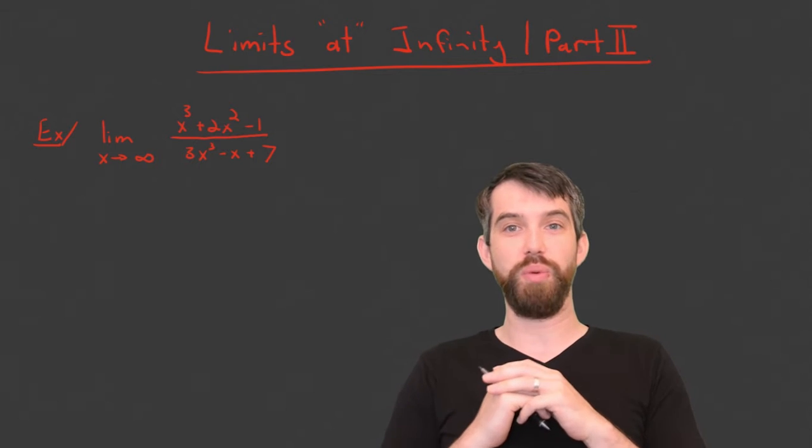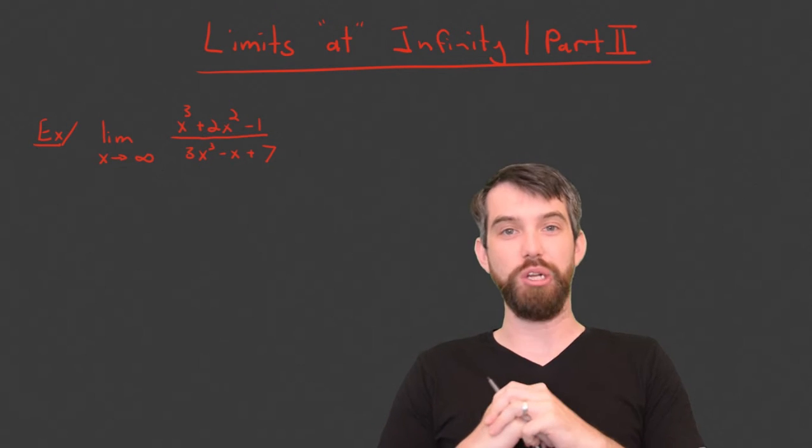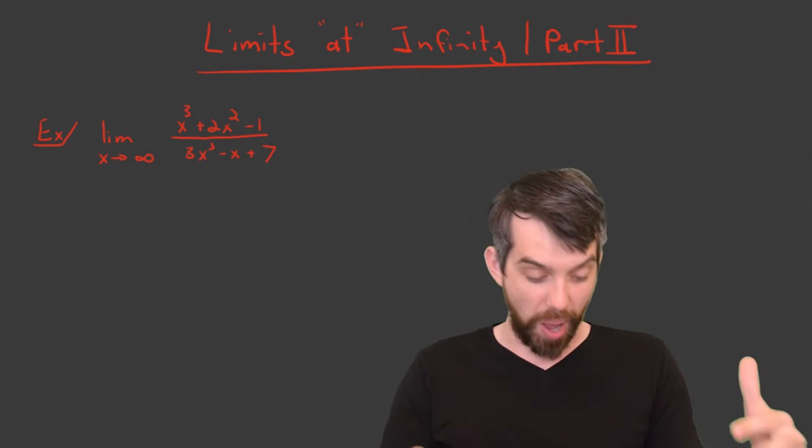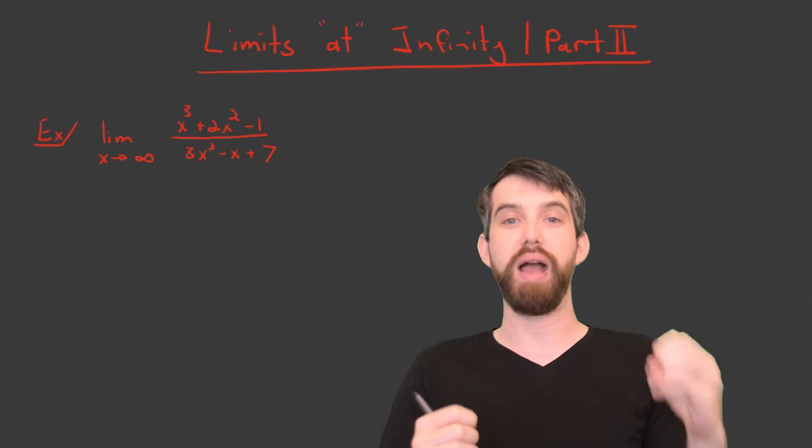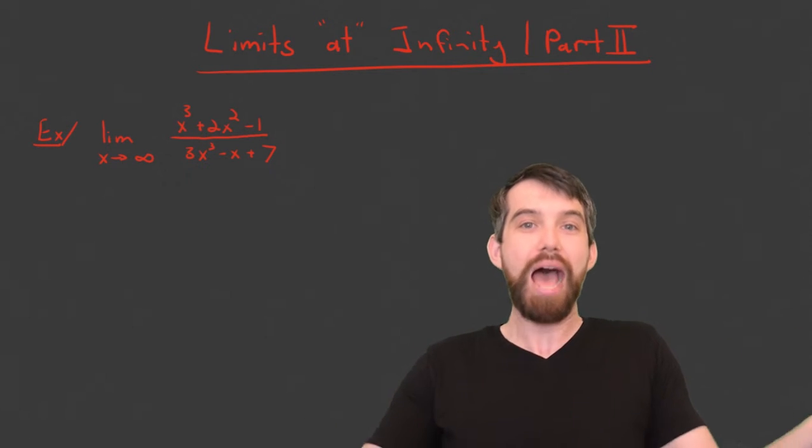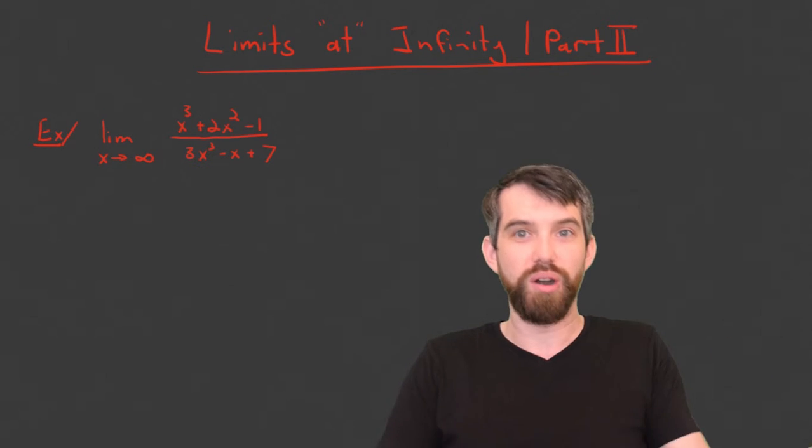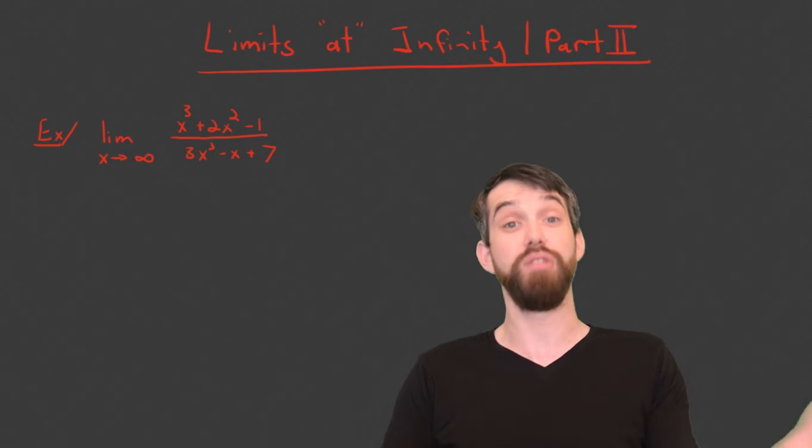So here's one such example. We have on the top a polynomial x cubed plus 2x squared minus 1, and on the bottom we have 3x cubed minus x plus 7. The question is, what happens as my x gets bigger and bigger? Does this function approach some value or does it not?